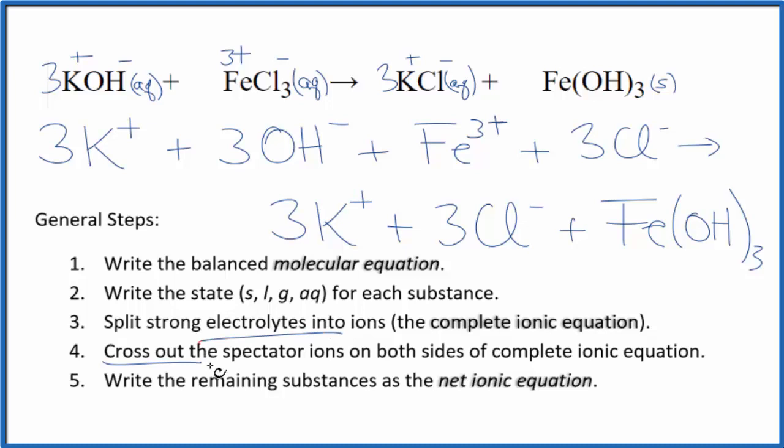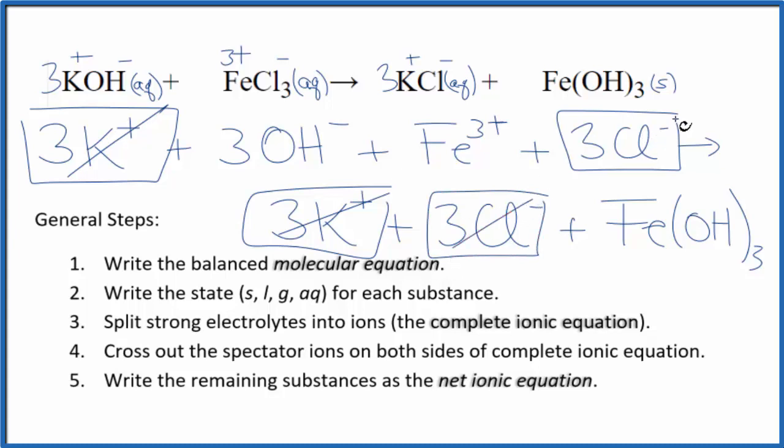Now we cross out spectator ions. They're on both sides. They haven't changed and we're not interested in them. So in the reactants, here's three potassium ions and in the products here, three potassium ions. Three chloride ions in the reactants and again in the products. Get rid of those. And we're done.